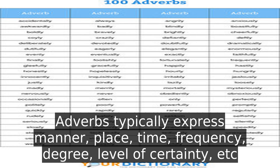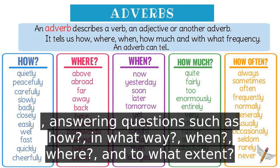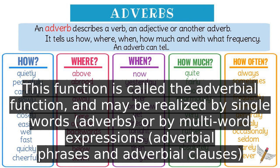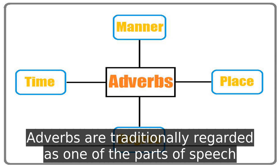Adverbs typically express manner, place, time, frequency, degree, level of certainty, etc., answering questions such as how, in what way, when, where, and to what extent. This function is called the adverbial function, and may be realized by single words — adverbs — or by multi-word expressions: adverbial phrases and adverbial clauses.